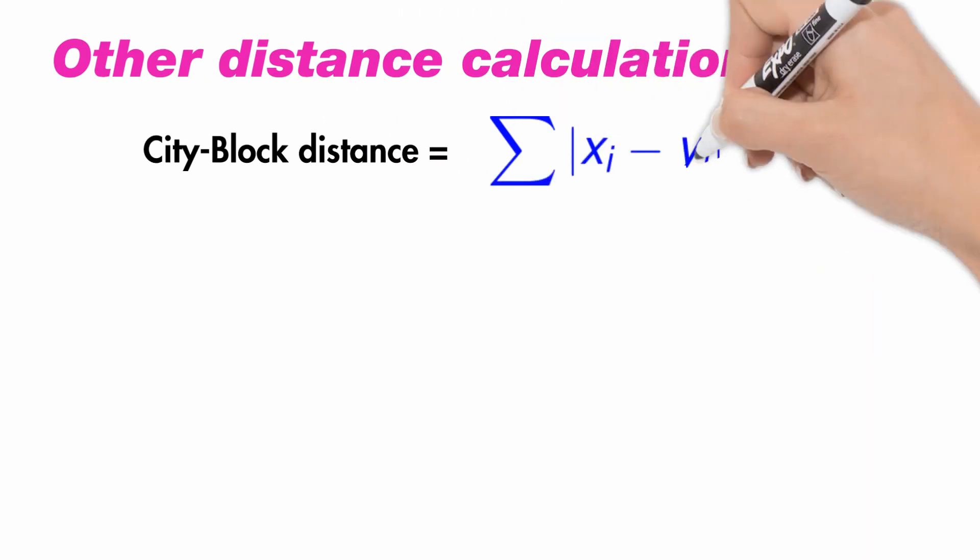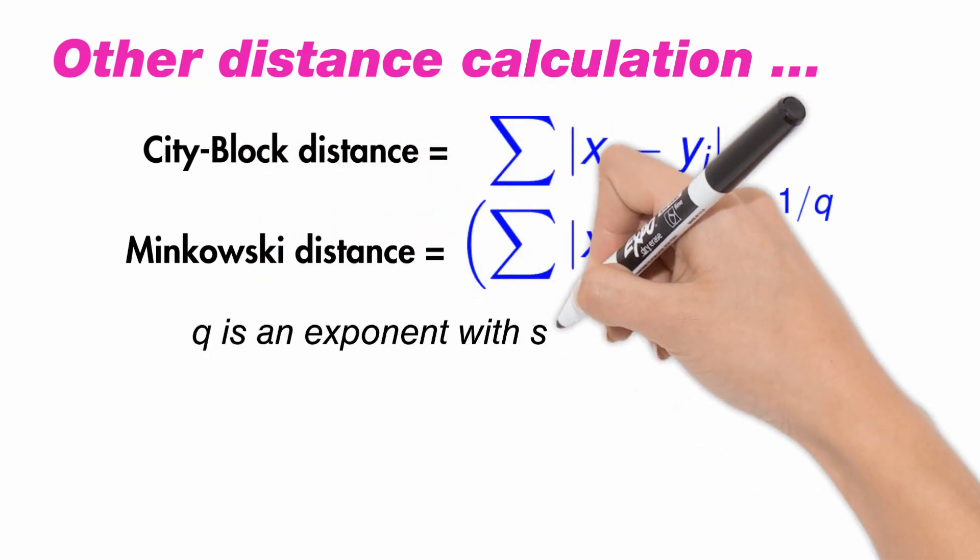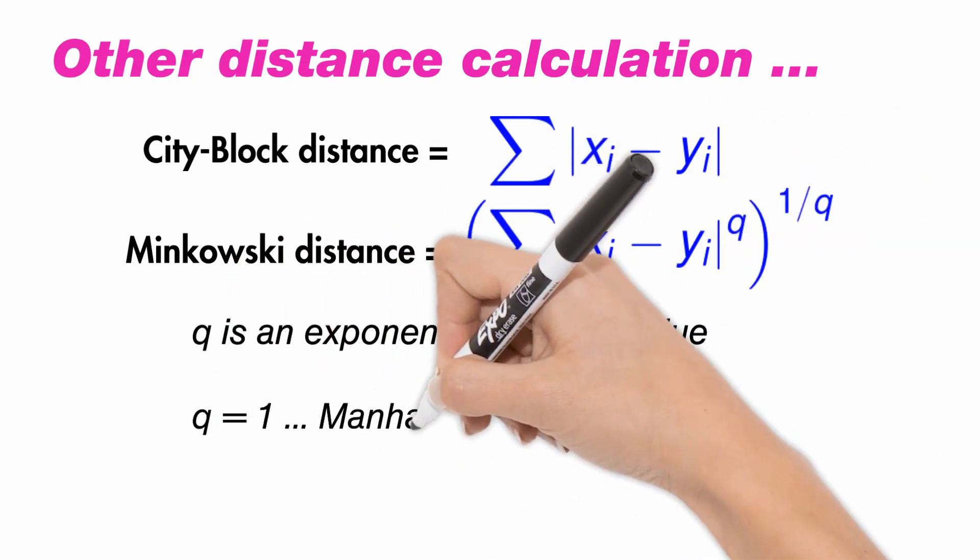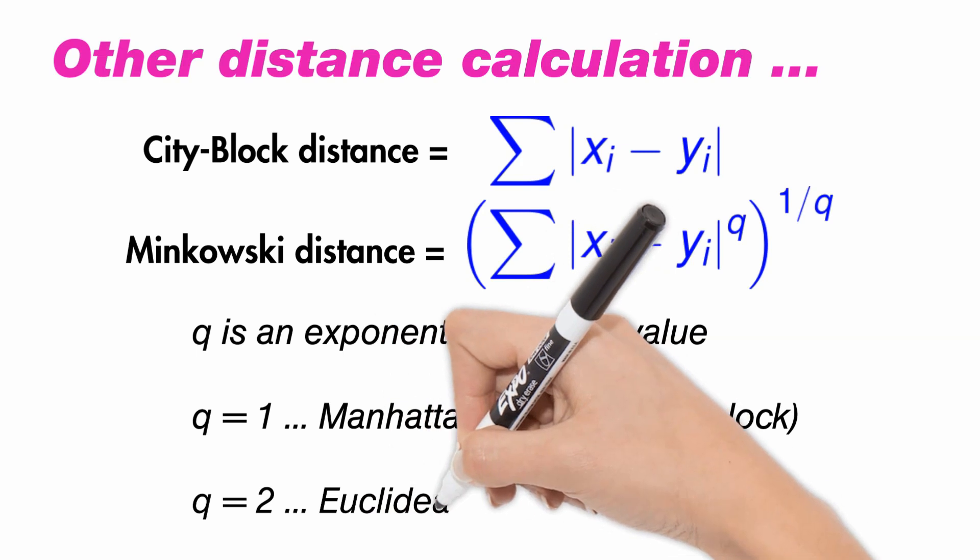The distance can also be calculated using other distance methods like City-Block distance method and Minkowski distance measure with their respective formulae. A point to note: q takes any exponent value. When the value of q is 1, we get the Manhattan distance or the City-Block method. When the value of q is 2, we get the Euclidean distance measure.